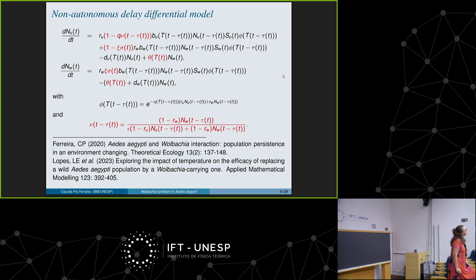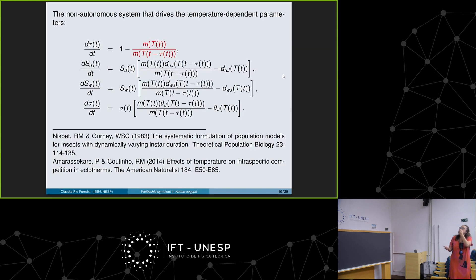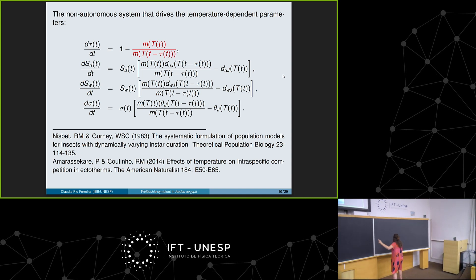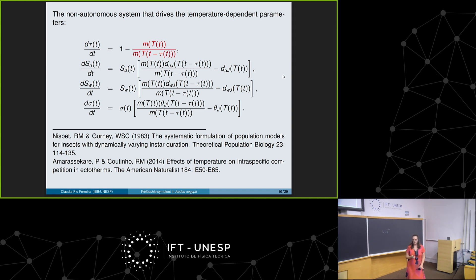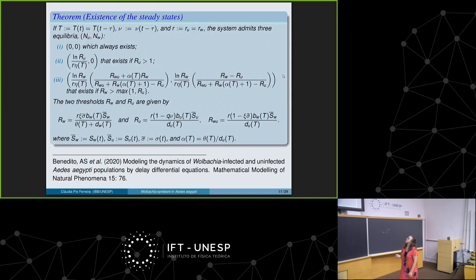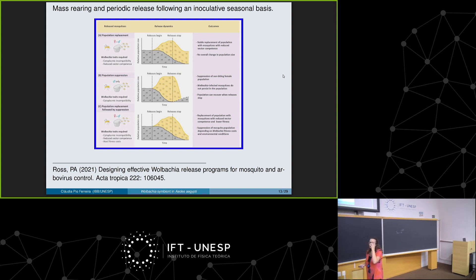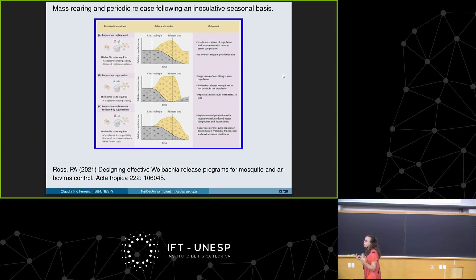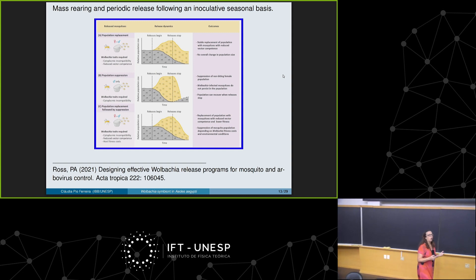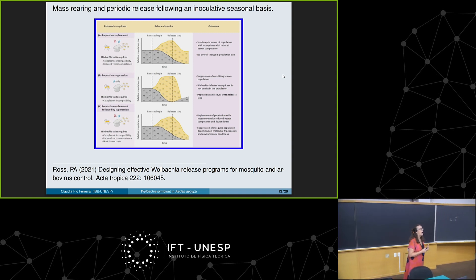When temperature is constant, I stay with two variables and it's workable by hand. Then for numerical simulations, we play with the temperature, think about scenarios where we release infected mosquitoes, try to measure if the technique is effective, and draw conclusions about how temperature affects results. In the field, you first decide whether you want to suppress or replace the population — based on your objective, you define your strain. Researchers are doing mass rearing and periodic release on an inoculative seasonal basis, checking the population periodically to see if a new release is needed.